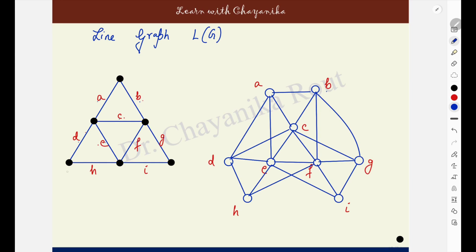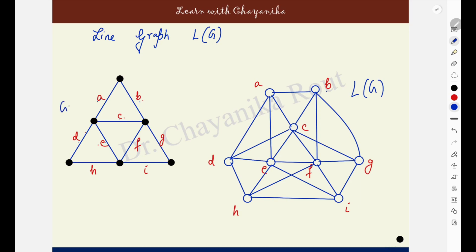Next come to H. H is having these two end points shared with D, E, F and I. So H is adjacent to D, E, F and I. Next come to edge I. These are the end points which are shared with G, E, F and H. I is made adjacent to G, E, F and H — already done. No more adjacencies are to be drawn. This is the line graph L(G) for the given graph G.